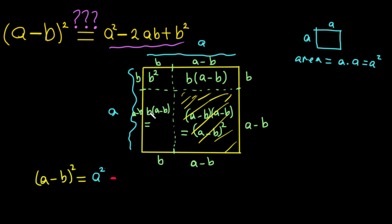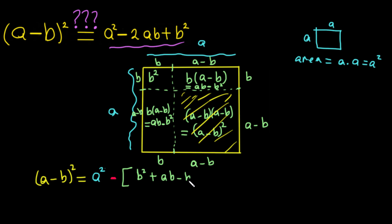Now let's write it out. We can simplify: this rectangle equals b multiplied by a, which is ab, minus b multiplied by b, which is b². The same for the other rectangle: ab minus b². So we have two rectangles of the same area. Writing it all together: a² minus [b² plus (ab minus b²) plus (ab minus b²)].